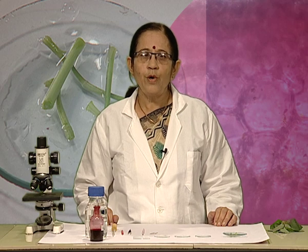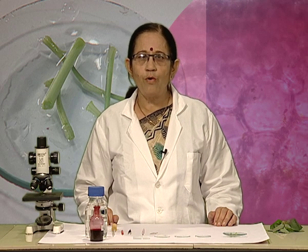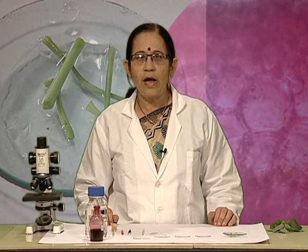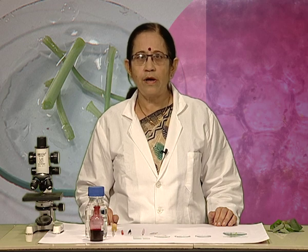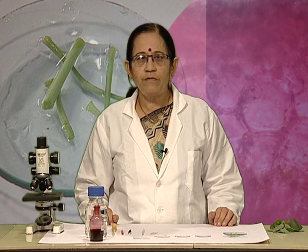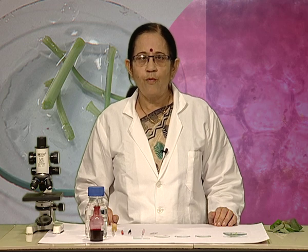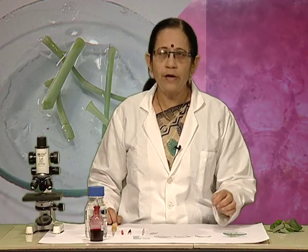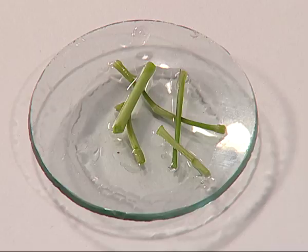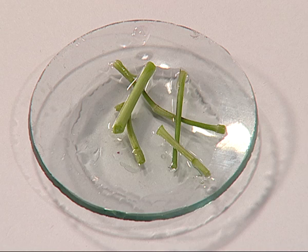Today, students, we will be studying about parenchyma and sclerenchyma in a temporary stained slide. For this, we require the plant stem of a herbaceous plant. This stem should be soft and it should be cut into about 3 centimeter pieces and put in water.